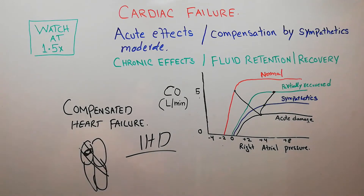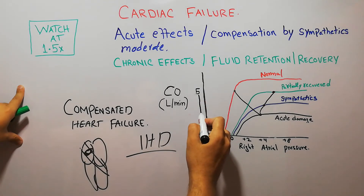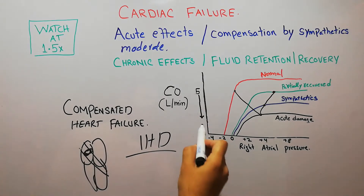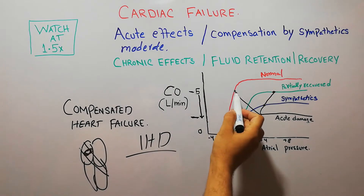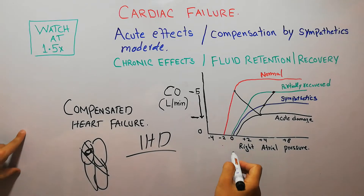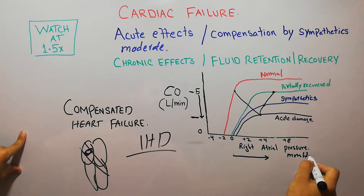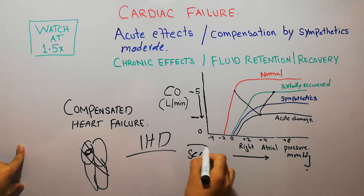The cardiac output has suddenly dropped from 5 liters per minute down to around 2 or 3 liters per minute. At the same time, the right atrial pressure increases from 0 to around 3 or 4 millimeters of mercury. This happens in seconds.